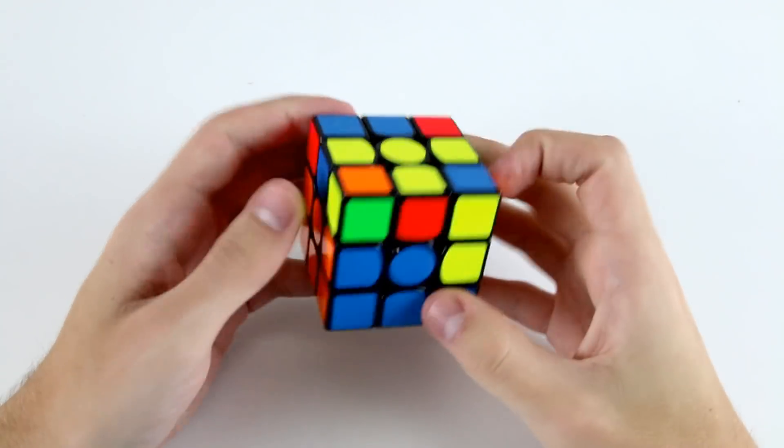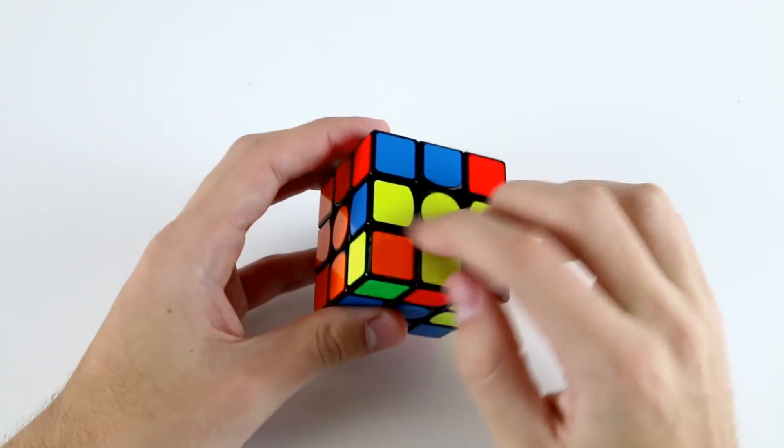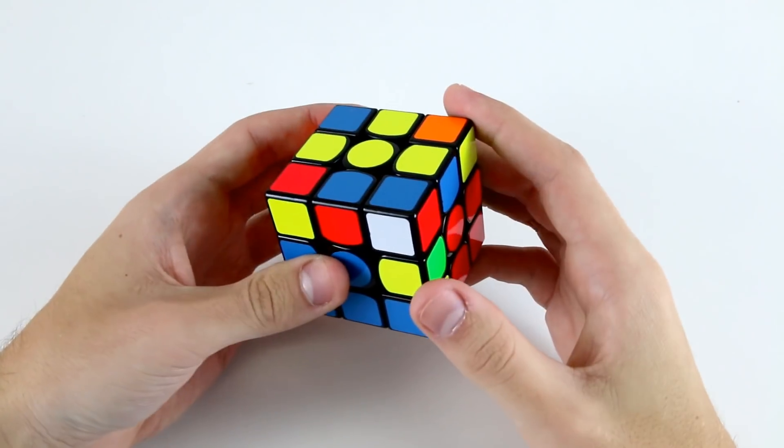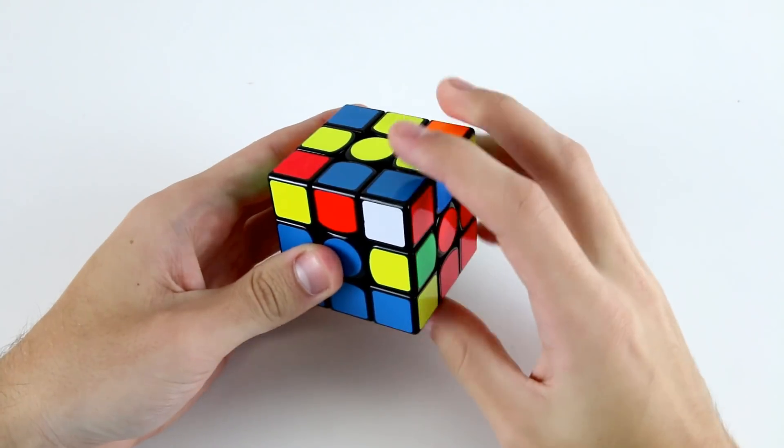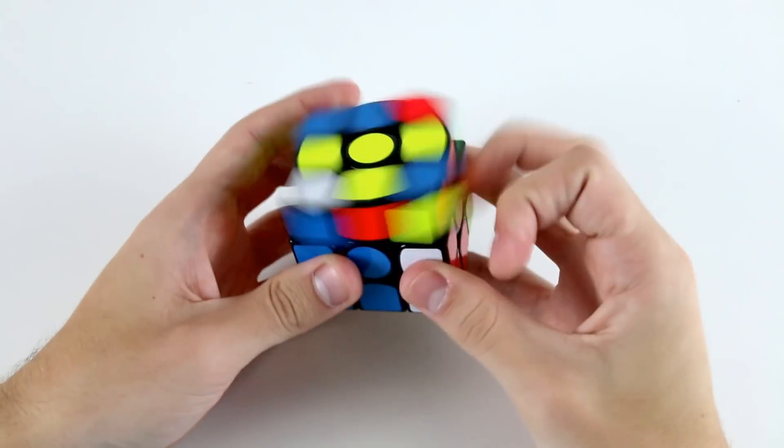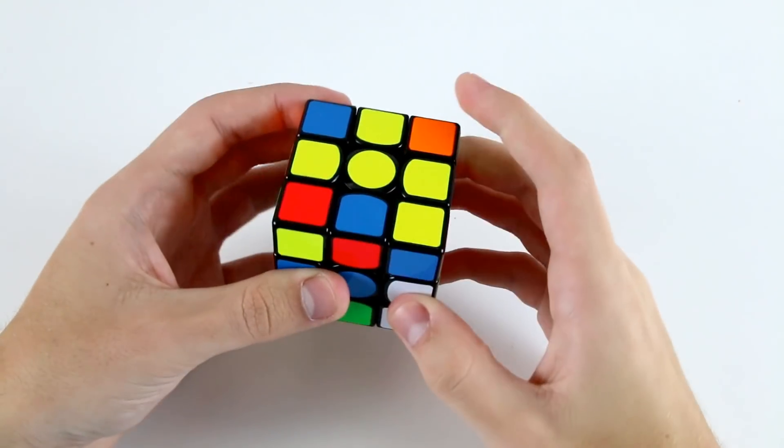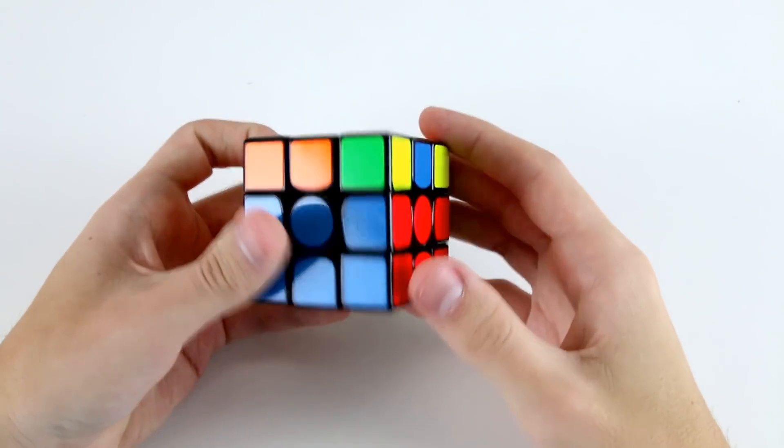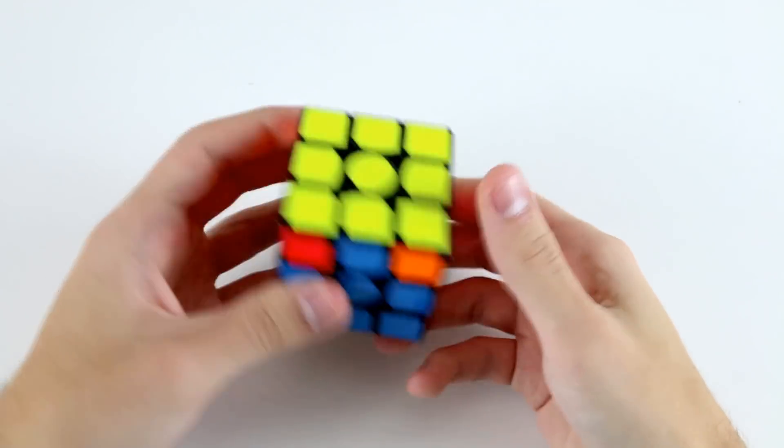Then I've got a case here which is a little bit annoying. Ideally I want to keep my last layer edges oriented whilst doing this pair. I can do that in a number of different ways. I could do r u r' and then solve the pair, or I could do r u' r' and then solve the pair. Another one that I like to do is r' d' r u' r' dr and then insert. Then I've got OLL and an f permutation.